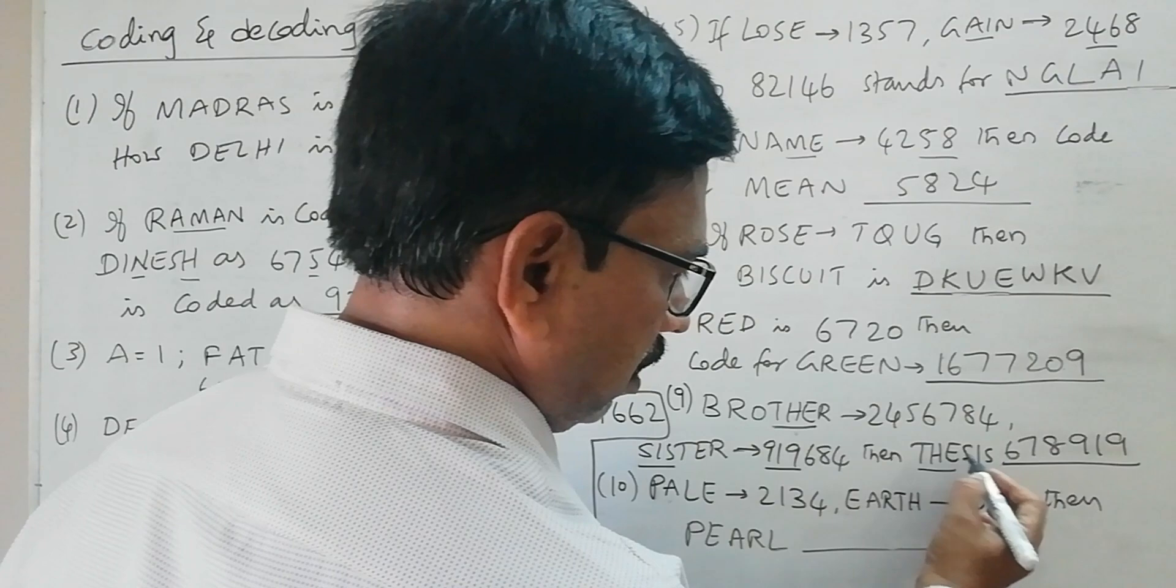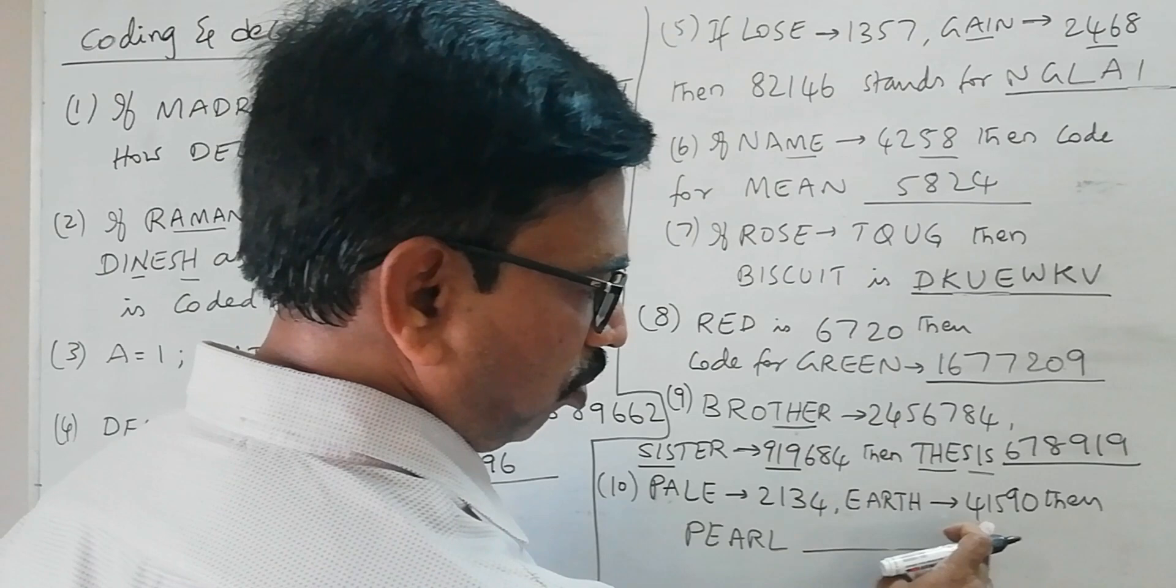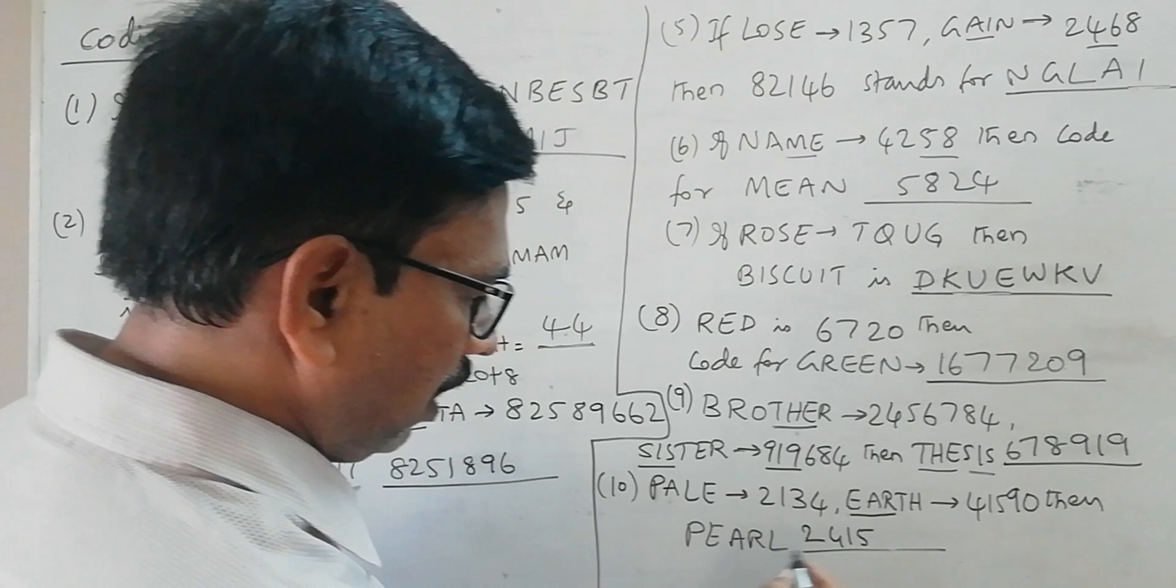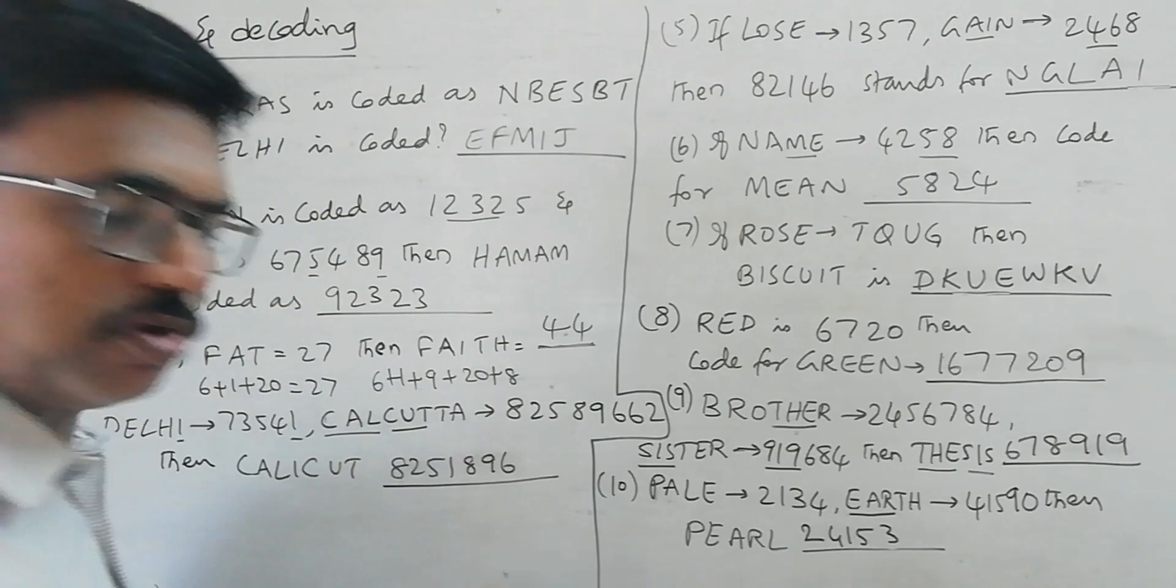Then the last problem is PALE is coded as 2134, and EARTH is coded as 41590. Then what is the code for PEARL? So P is 2 here, E-A-R is there which is 415, and L is 3: P-E-A-R-L. So this is how we can solve this kind of coding and decoding problems.